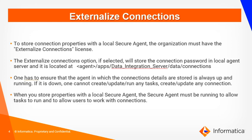To store connection properties with a local secure agent, the organization must have an externalized connections license. If the externalized connections option is selected, it will store the connection password in the local agent server. It would be located at: secure agent installation directory, apps, data integration server, data, and connections.